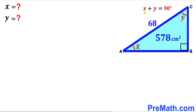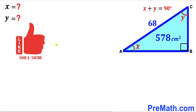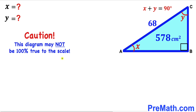In other words, the sum of these two angles x plus y must equal 90 degrees. Our task is to find the value of angle x and the value of angle y. Please don't forget to give a thumbs up and subscribe, and keep in mind that this figure may not be 100% true to scale.